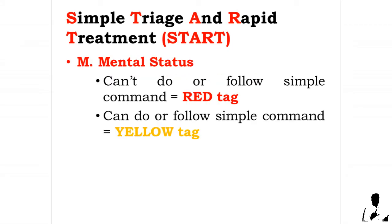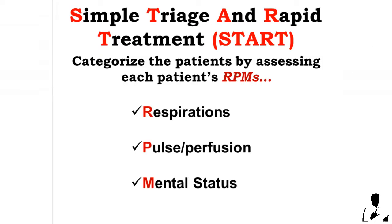M — Mental Status: if the patient cannot follow simple commands, attach a red tag to the patient. If the patient can follow simple commands, attach a yellow tag. These are the three decision criteria used in categorizing patients who have not already been determined to be walking wounded.